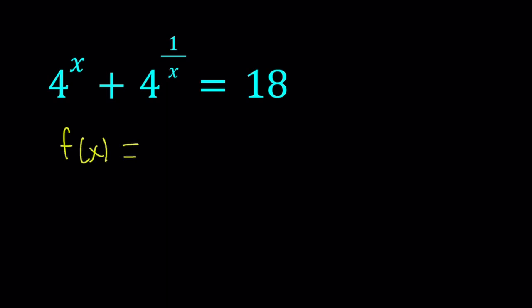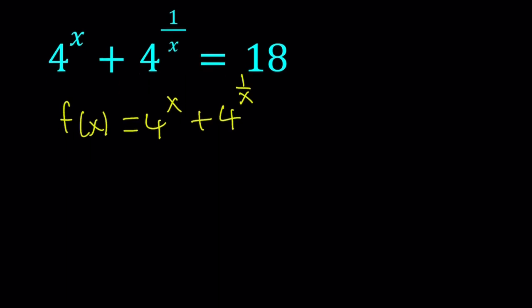Suppose f(x) = 4^x + 4^(1/x). Now, I'm going to differentiate this function, the first derivative. This is exponential so we can write it as 4^x · ln(4) + 4^(1/x) · ln(4) · (-1/x²) from chain rule, which is the derivative of 1/x.